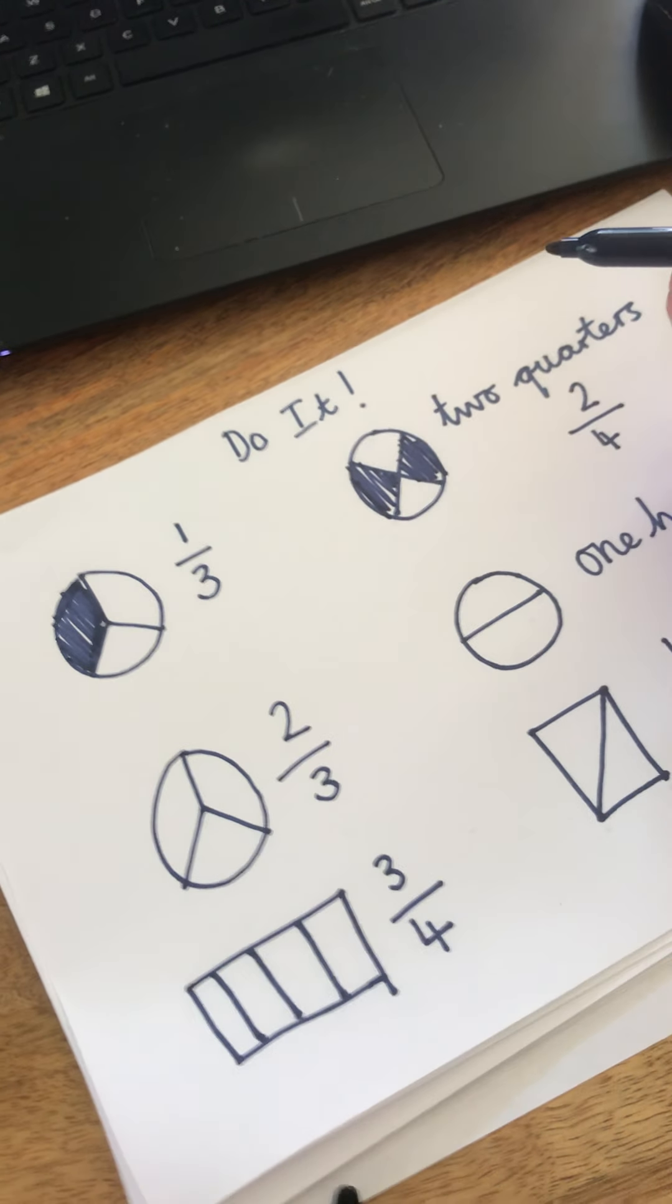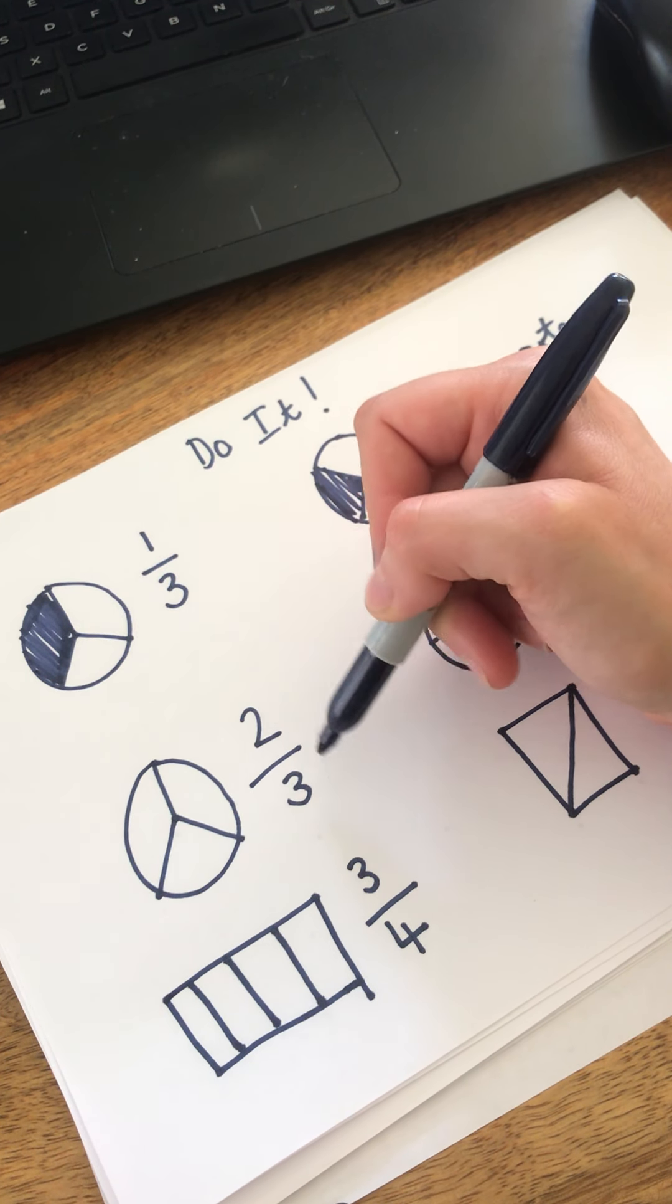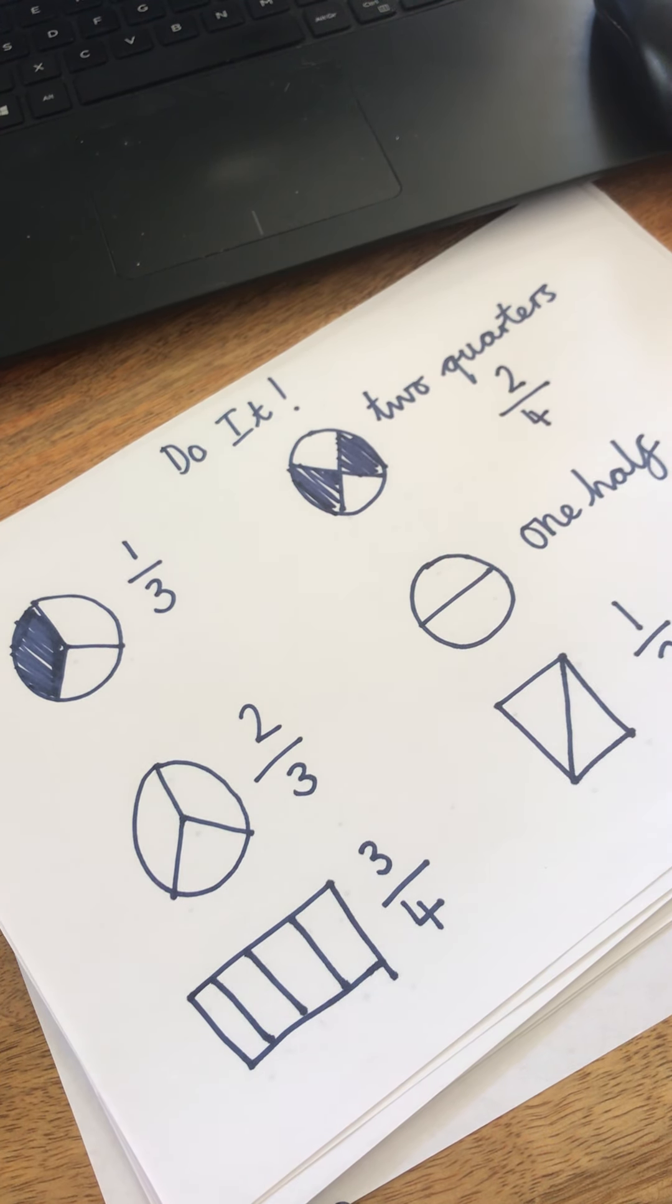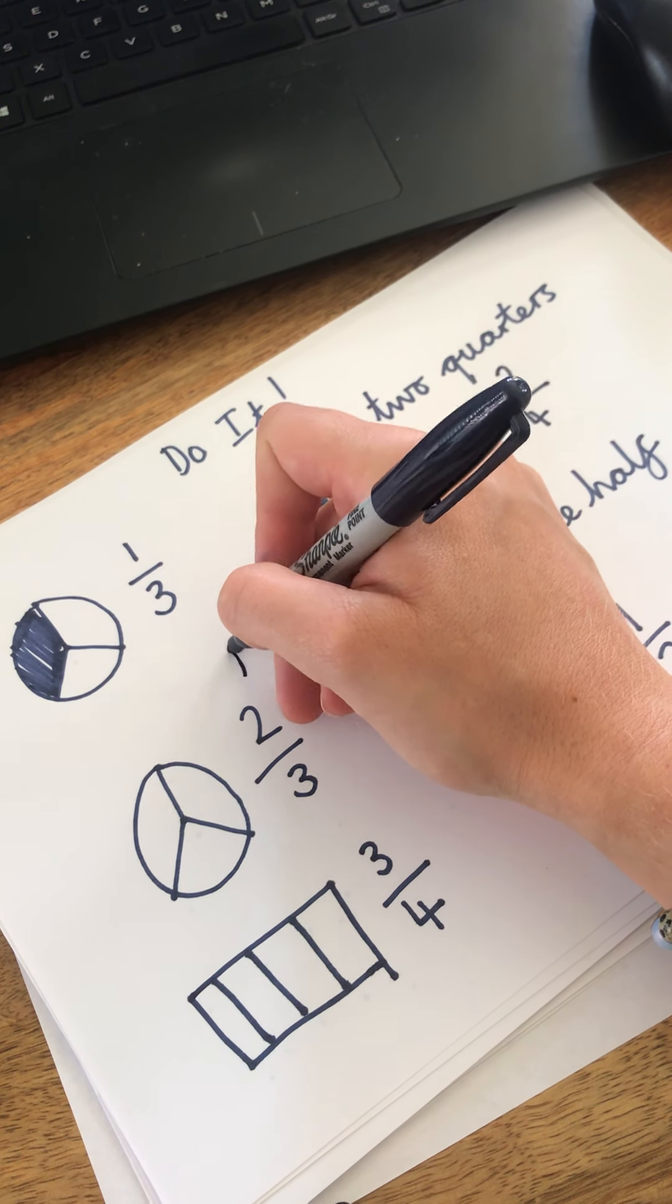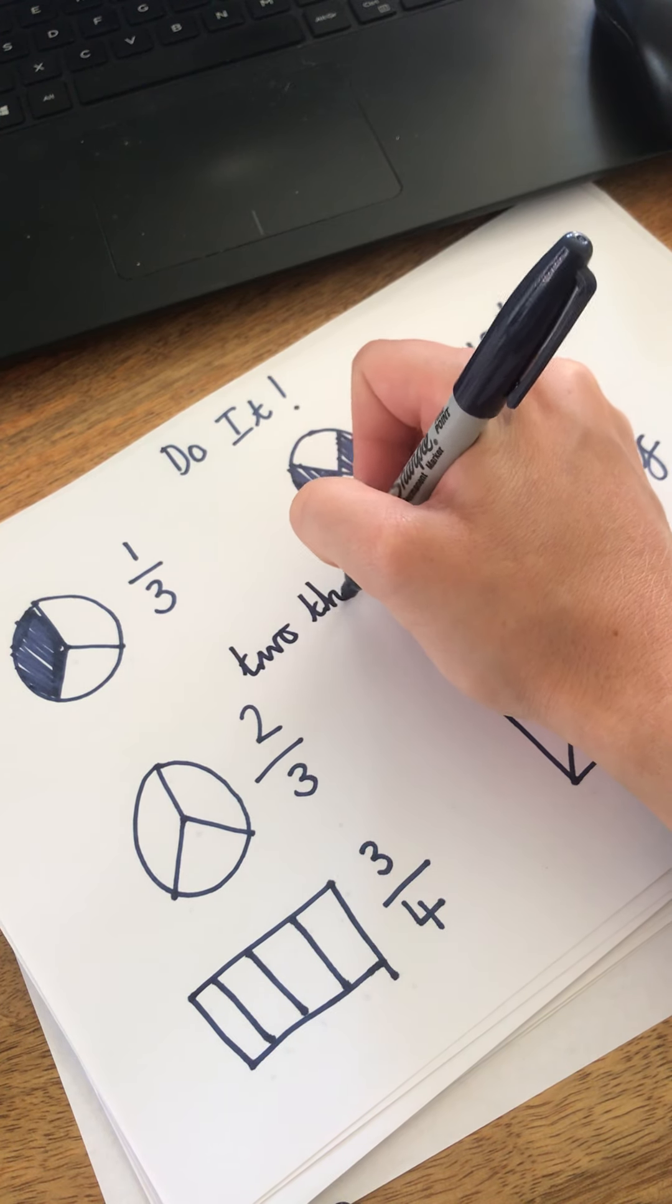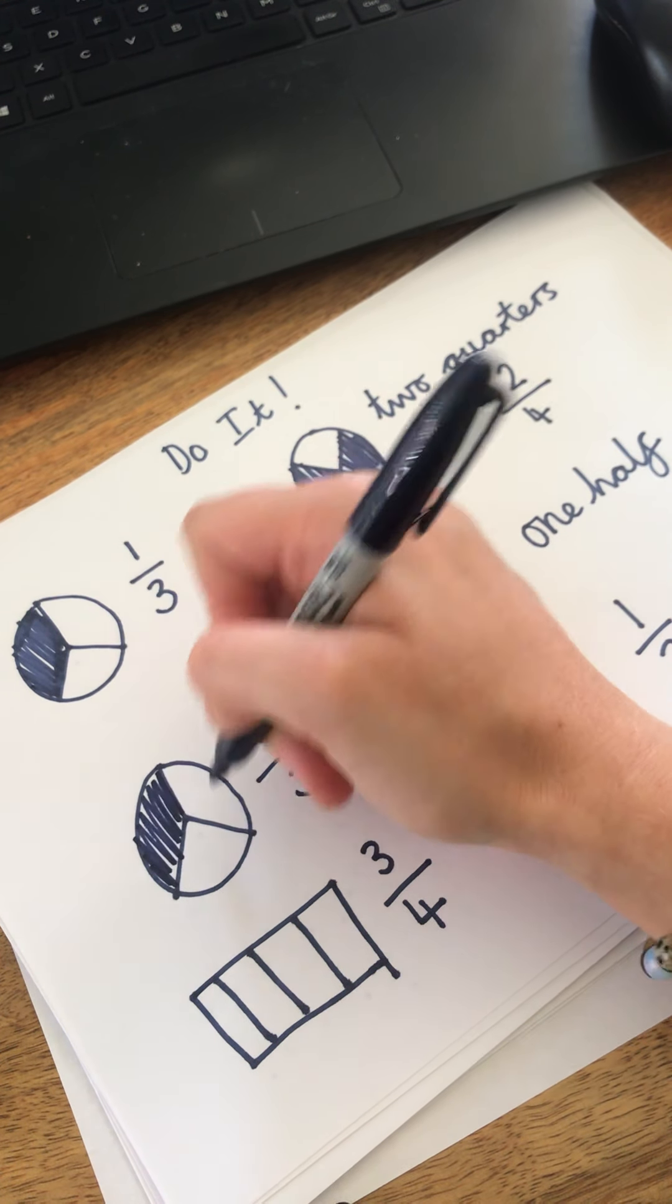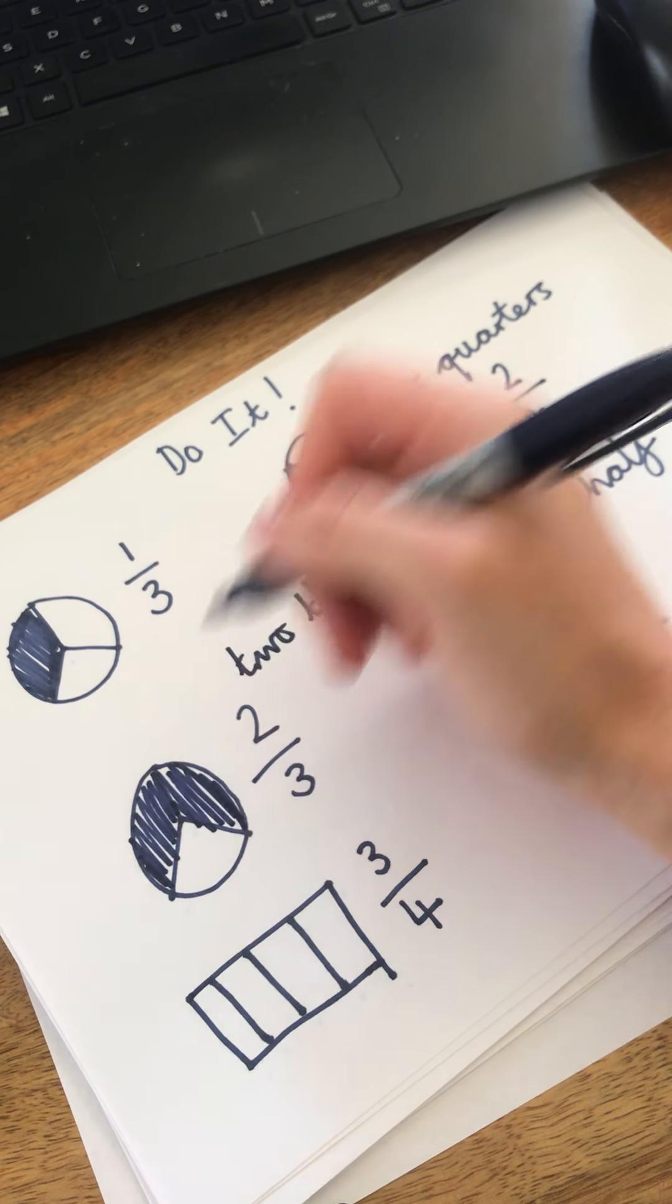This one down here, this is a bit trickier. This is different, this one. It's asking me to shade in two thirds. And again, if you want to really impress your teachers when you send us your work in by email, you can write the fraction next to it. So I'm going to impress Miss McDonagh. And I'm going to write two thirds. And I need to colour in two parts. There we go. And there's three parts all together.